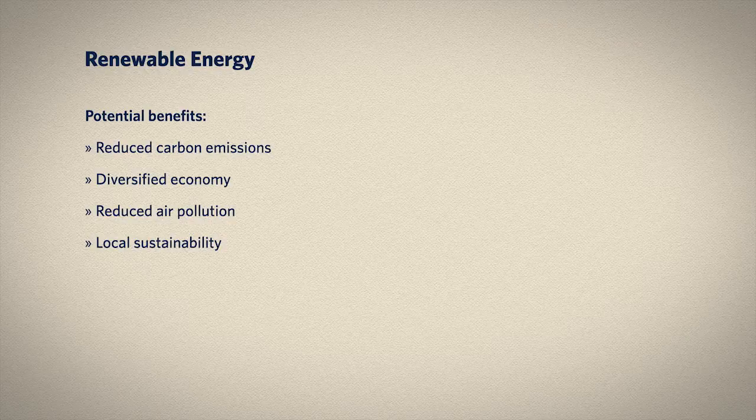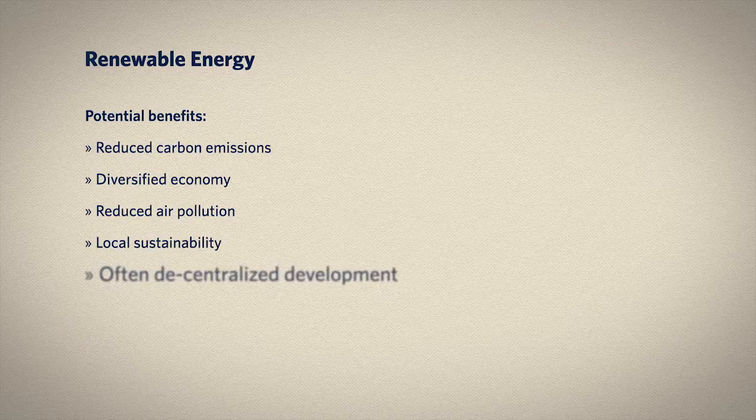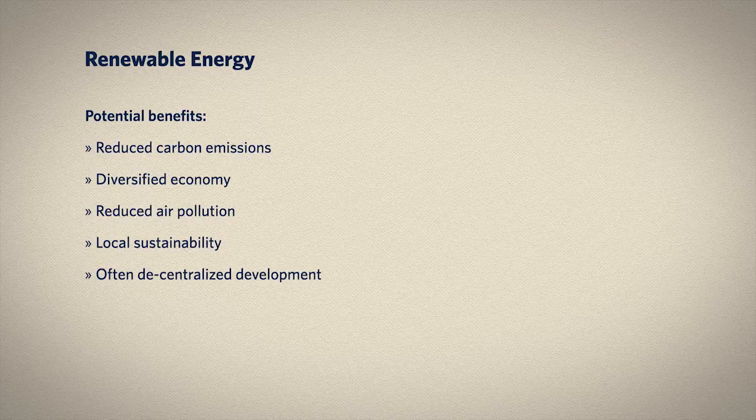Finally, while the traditional energy system is based on highly centralized production such as a coal-fired power plant, renewable energy often has the potential to be modular and decentralized. District energy systems can be created that are self-sustaining and removed from the grid, and individual families can power their homes through solar panels or microturbines. This makes a renewable energy system particularly resilient in the face of extreme weather events, political instability, and variations in resource flows.